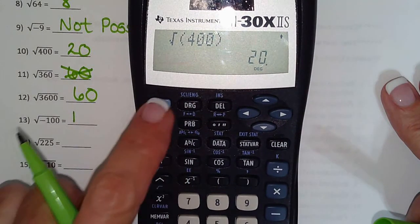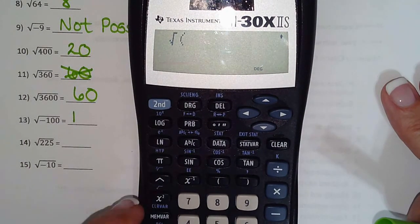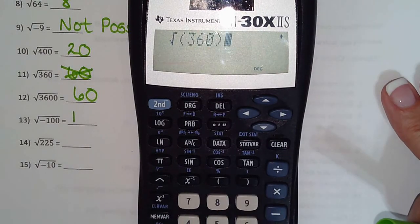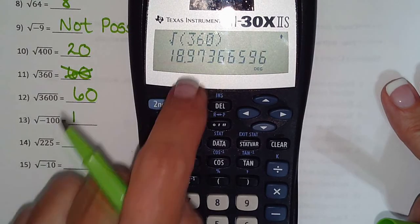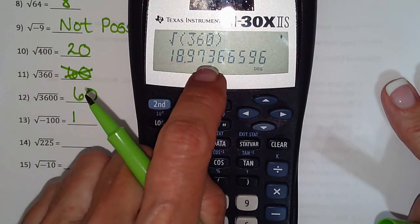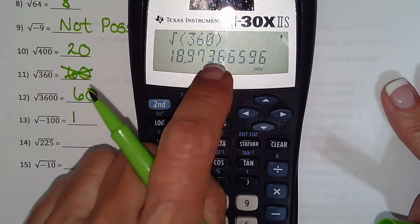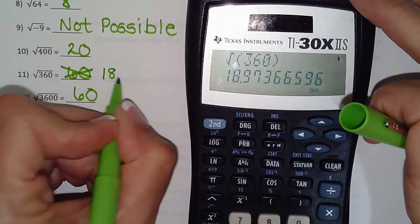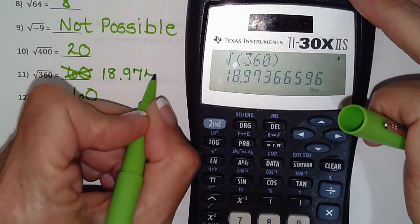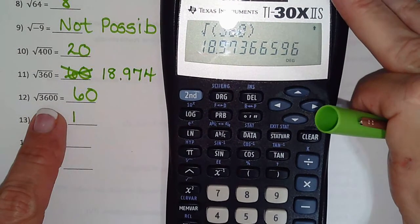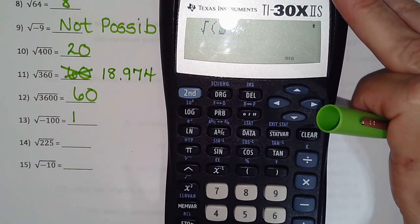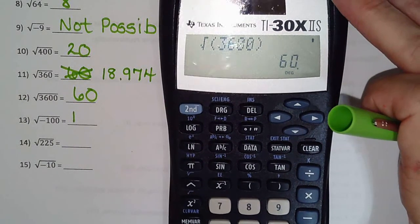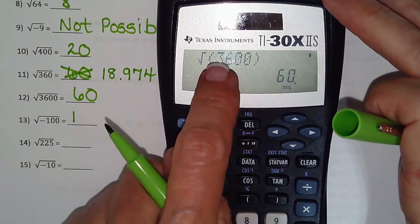So we hit second. The x squared button which has square root right above it. And then we did 3600, and that is 60, because 6 times 6 is 36, and then 2 zeros.